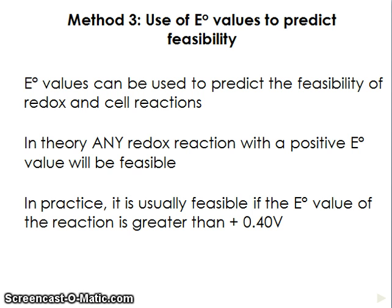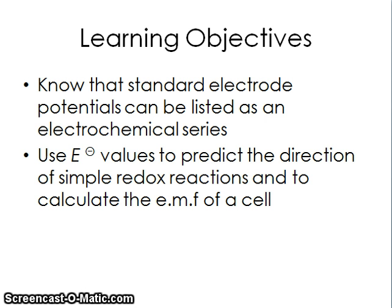Method three is to use the E° values to predict feasibility directly. If you work out the E° value of the cell as the equation is written, a positive E° value means that reaction will happen. In practice, a reaction is usually considered feasible if the E° value is greater than +0.4 volts, though you don't need to worry too much about that. Our learning objectives were: to know that standard electrode potentials can be listed as an electrochemical series, to use E° values to predict the direction of simple redox reactions, and to calculate the EMF of the cell. If anything in this video is unclear, go back and watch it again, read the textbook, or look at online notes before coming to lessons.